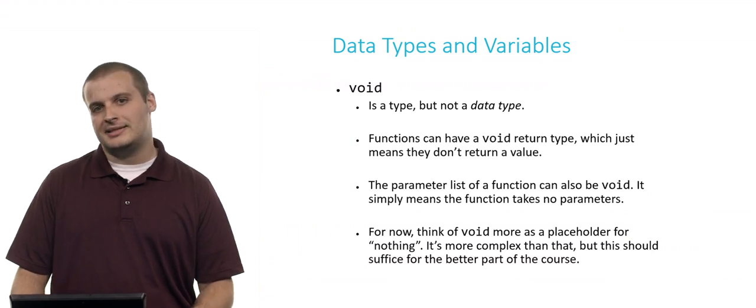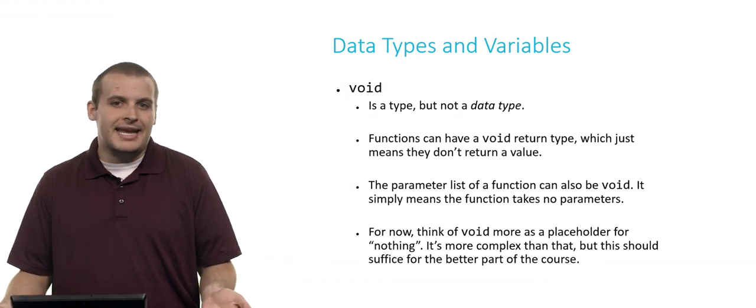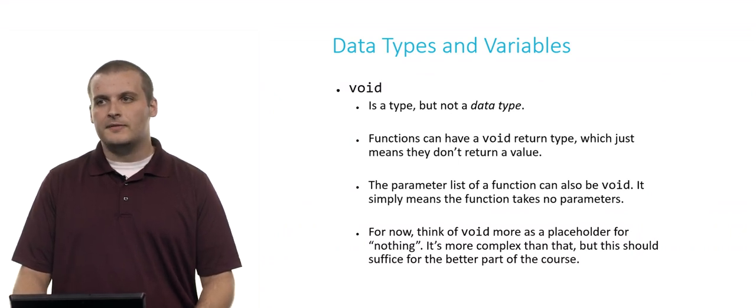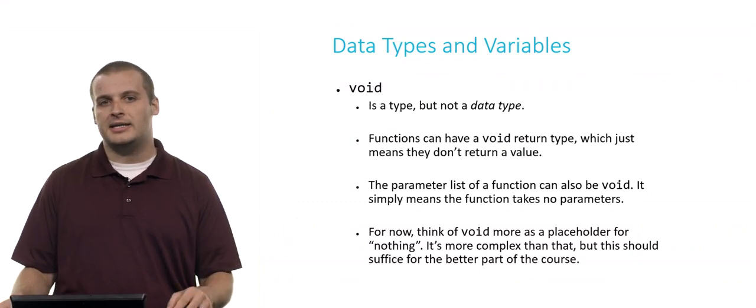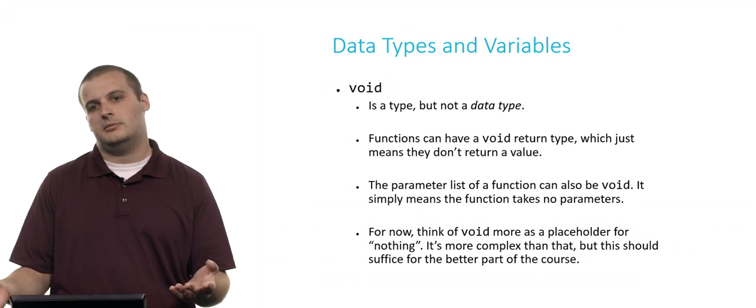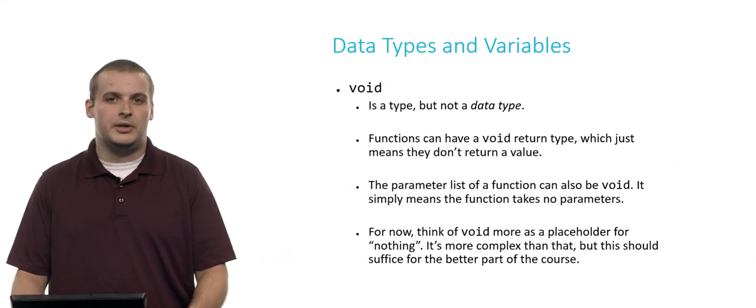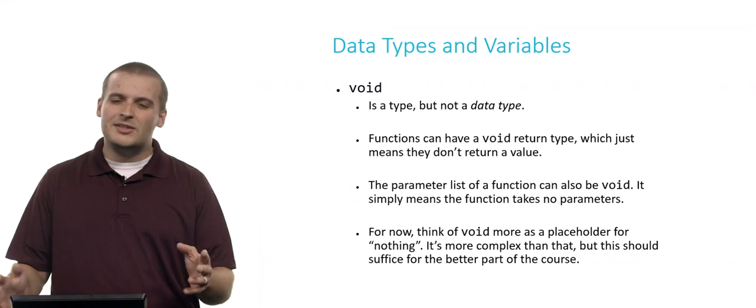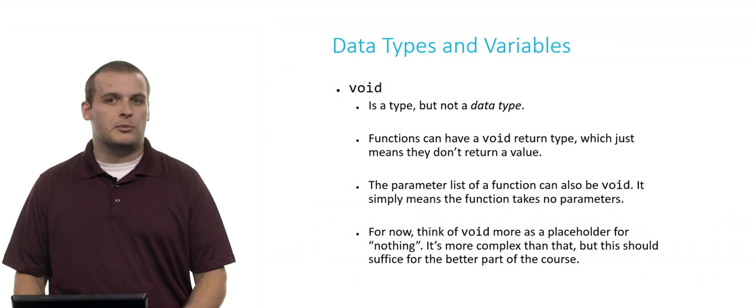The parameter list of a function can also be void. Int main void, does that ring a bell? Basically, what that means is that main doesn't take any parameters. There's no arguments that get passed into main. So for now, suffice it to say that void basically should just serve as a placeholder for you as thinking about it as nothing. There's no return value here. There's no parameters here. It's a little more complex than that, but this should suffice for the better part of the course.